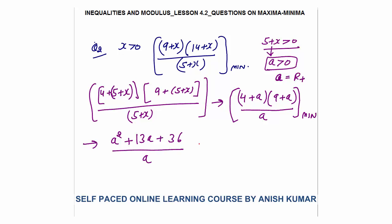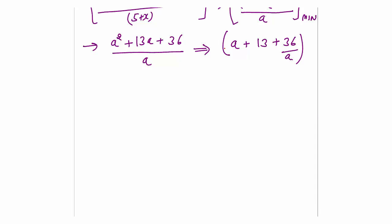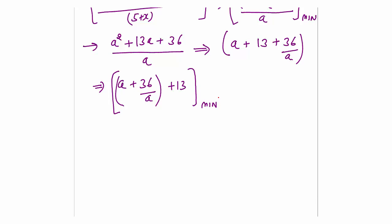Multiplying out the numerator gives a² + 13a + 36. Dividing by a gives a + 13 + 36/a. To find the minimum, I separate this as (a + 36/a) + 13. Since 13 is a constant, I just need to minimize a + 36/a.